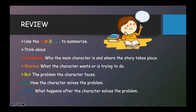Now, let's wrap up and review what we've learned today. We learned how to use the SWBST strategy to summarize a story. Remember to think about the following points while reading to determine the main elements of a story: who the main character is and where the story takes place, what the character wants or is trying to do, the problem the character faces, how the character solves the problem, and finally, what happens after the character solves the problem or at the end of the story.